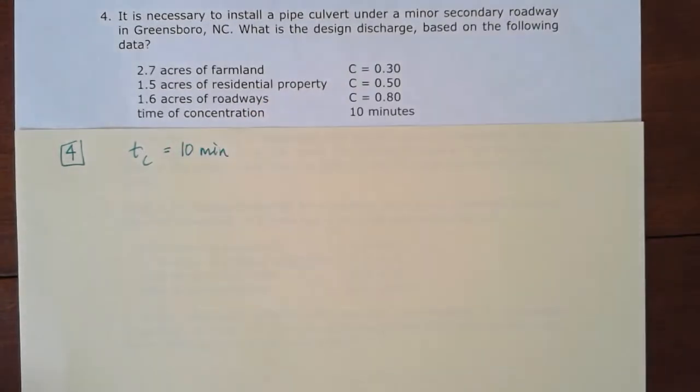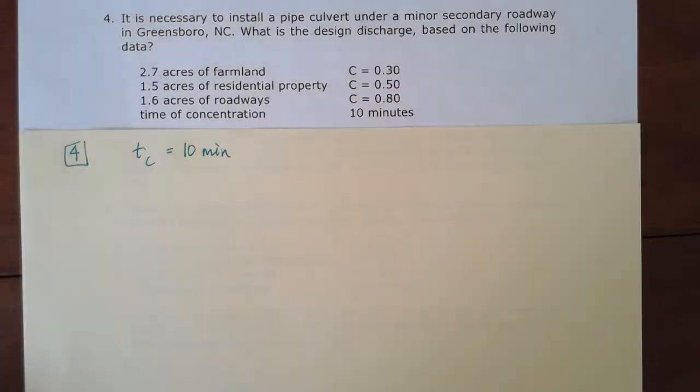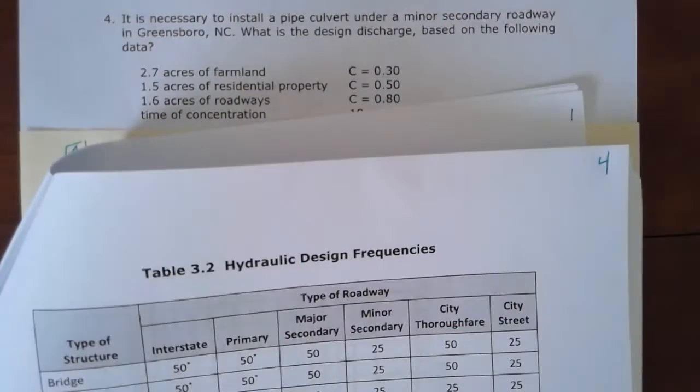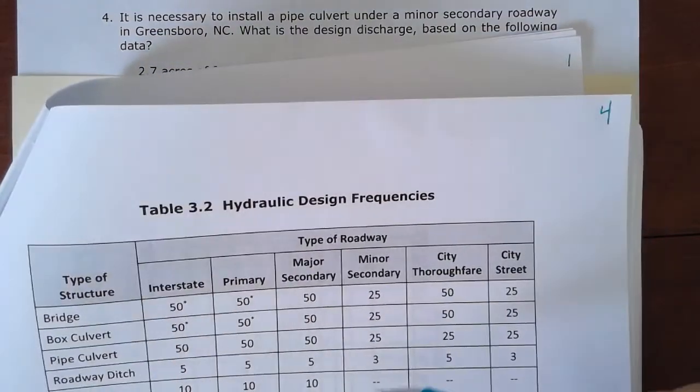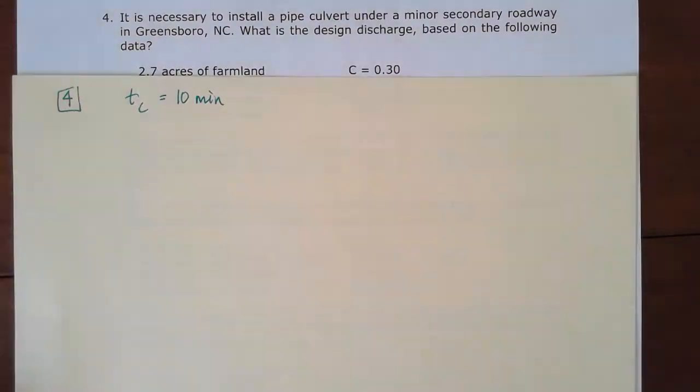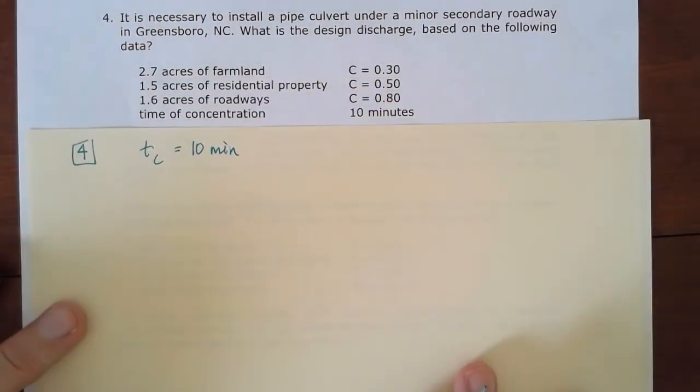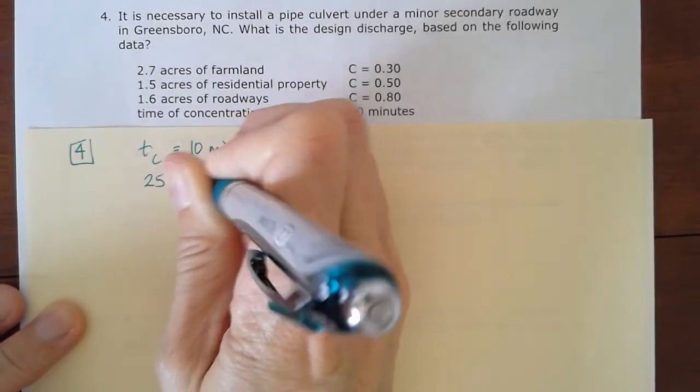We're told that it's a pipe culvert under a minor secondary roadway. So we'll go ahead to our table 3-2. Look at our minor secondary and pipe culvert, and we'll see that that is a 25-year design duration there. So a 25-year storm design for that.